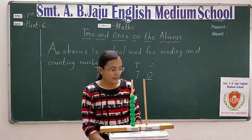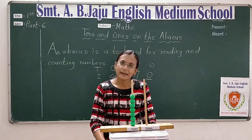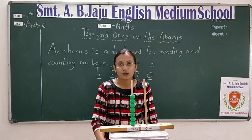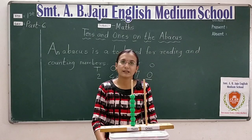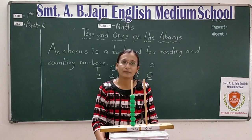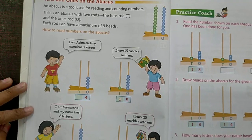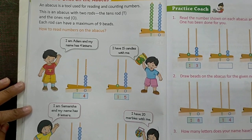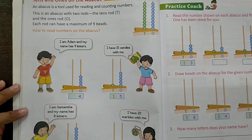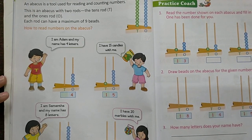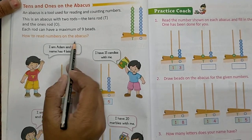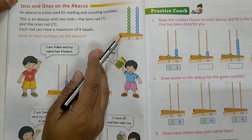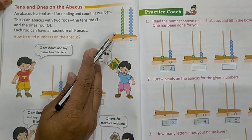Toh aaj humne kya dekha? Abacus pe numbers kaise read karte hain. Aur ab hum kya karne wale hain? Two digit numbers jo humare book mein diye hain, woh abacus pe kaise read karte hain, yeh dekhne wale hain. Students, ab hum hamare textbook mein kuch examples diye hain, woh dekhne wale hain. Okay? Open page number twenty-two. How to read numbers on abacus.